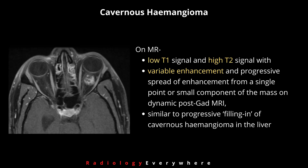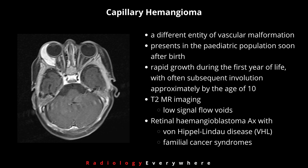On MRI, cavernous hemangioma shows low T1 signal and high T2 signal with variable enhancement and progressive spread of enhancement from a single point — a more characteristic feature of the mass on dynamic post-gadolinium MRI. This is similar to the progressive filling-in seen with cavernous hemangioma in the liver. For management, a conservative approach and monitoring may be favored over surgical resection.